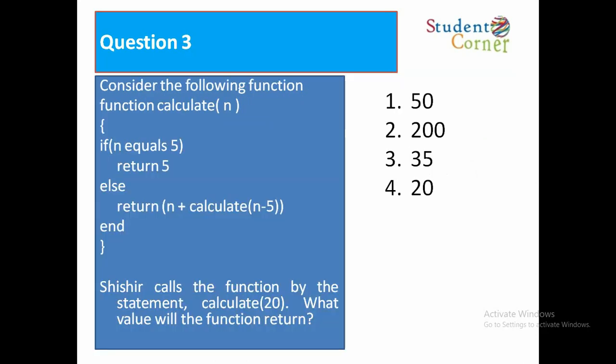Question number 3. Consider the following function: function calculate(n) if n equals to 5 return 5, else return n plus calculate(n minus 5). It calls the function by the statement calculate(20). What value does the function return? Option 1: 50, Option 2: 200, Option 3: 35, Option 4: 20. The answer is 50.